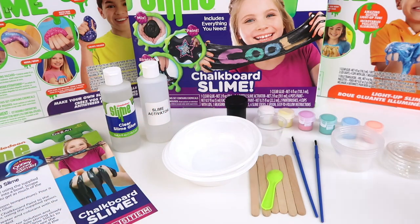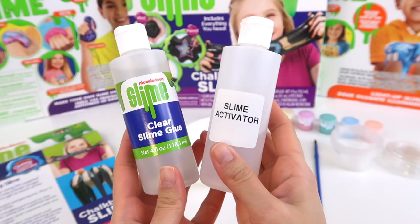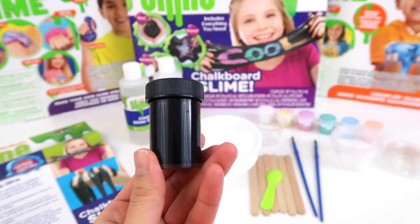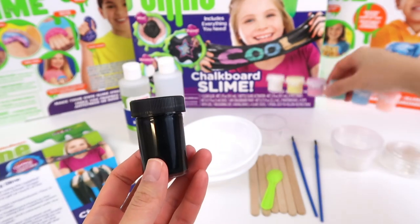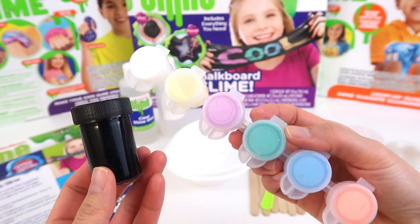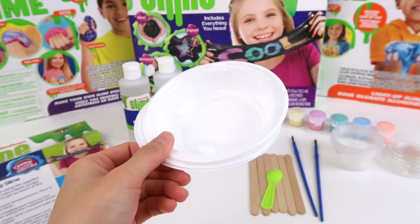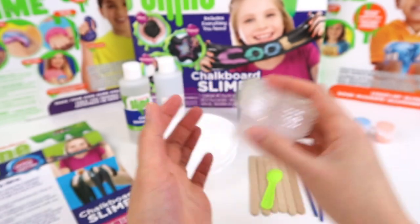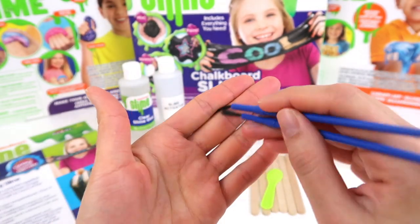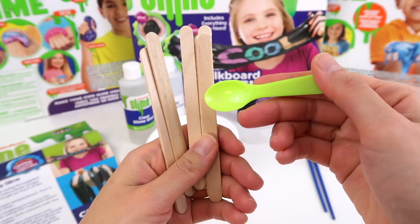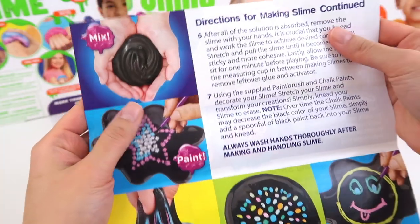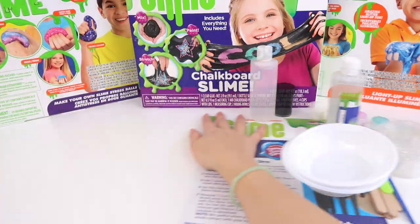We are all set! Let's take a look at what we have! One clear Slime Glue and Slime Activator, our main item which is black paint, and this is six different chalk paints for painting. Two bowls, one measuring cup, four storing containers with lids, two paint brushes, some wooden sticks and one spoon. And of course our instruction front and back. Let's get started already!